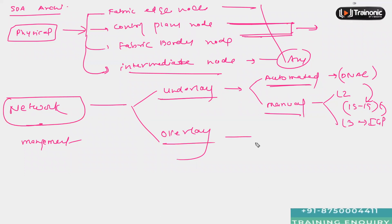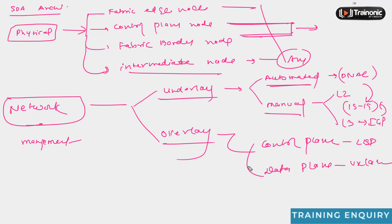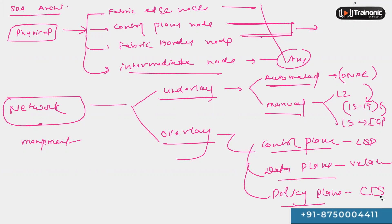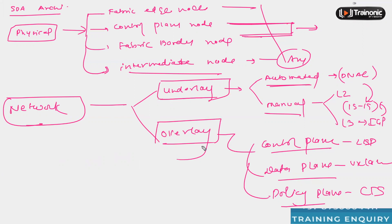In the overlay we have a control plane based on LISP, we have a data plane based on VXLAN, and we have the policy plane based on Cisco TrustSec. Different VXLAN tunnels are created from one fabric edge node to another fabric edge node, and within those tunnels your data is going to pass. The overlay carries the data for different users from one fabric edge node to the other fabric edge node over the underlay, after encapsulating it with protocols such as VXLAN.